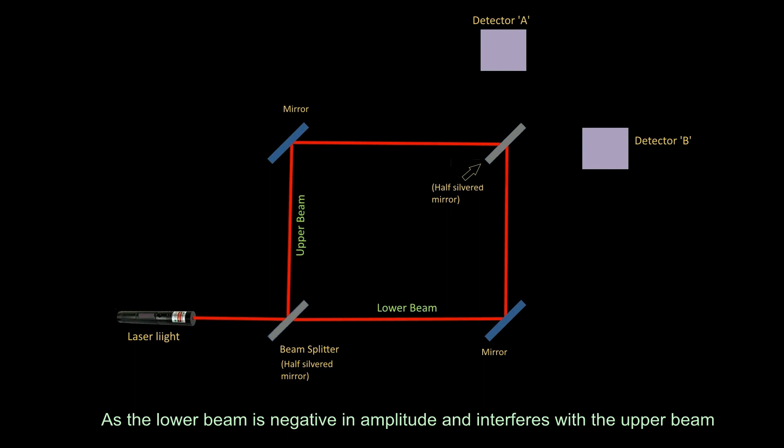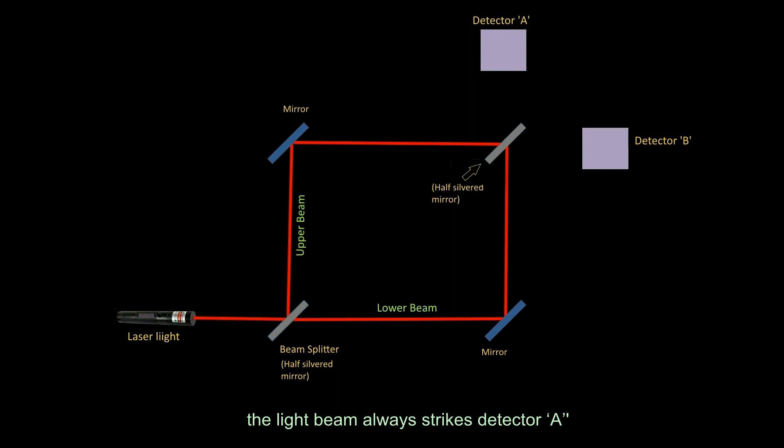As the lower beam is negative in amplitude and interferes with the upper beam, the light beam always strikes detector A. No light beam strikes detector B.